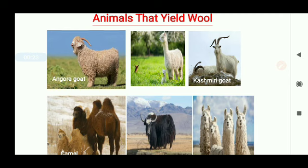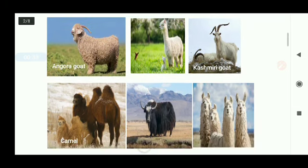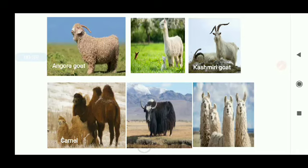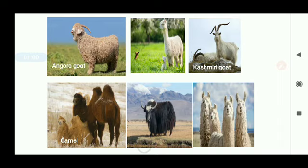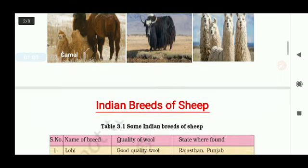The third figure shows a Kashmiri goat, which are also found in the hilly regions of Jammu and Kashmir. The fourth figure shows a camel. The fifth figure shows a yak, which are found in the Ladakh and Tibet area. The sixth figure shows a llama, which are also found in South America. So these are the animals which are generally used to get wool.